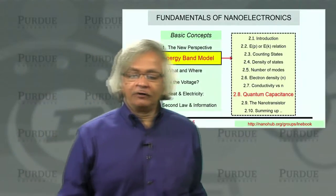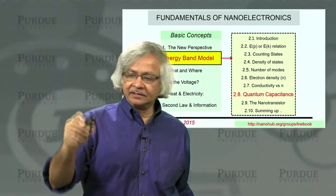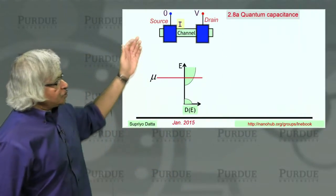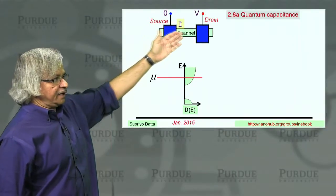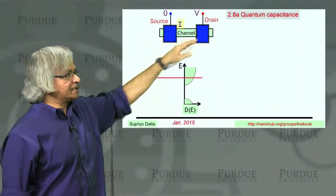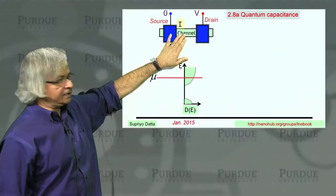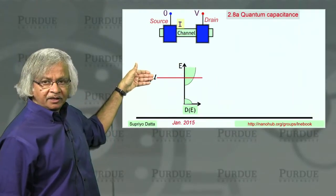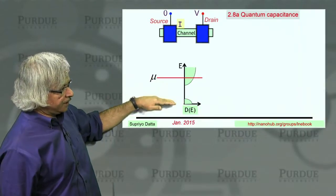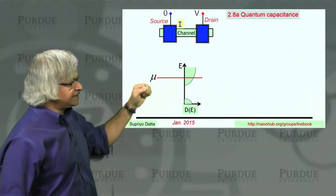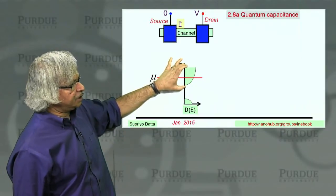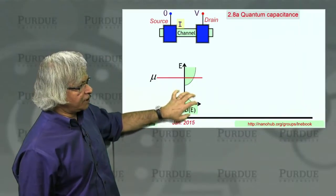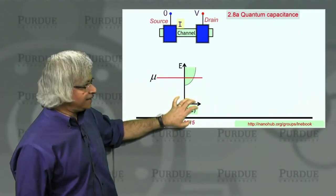Welcome back to Unit 2 of our course. This is the 8th lecture. So far we have been talking about this two-terminal device. There are two contacts and a channel. This channel has a density of states, and there's an electrochemical potential which tells you the level up to which the states are filled. For this discussion, we are really concerned only with the band at the top, like the conduction band.